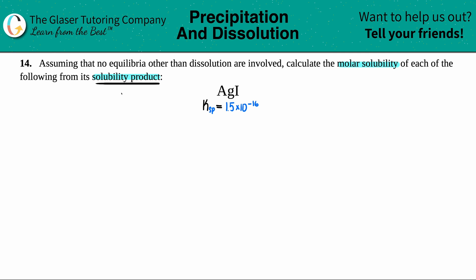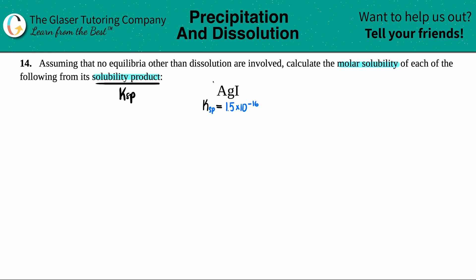Keep in mind that solubility product is just KSP — solubility product. I went to the back of the textbook to find out what the solubility product of AgI is. It's 1.5 times 10 to the negative 16. Now, what is a KSP value without a balanced equation? It's nothing. So I have to write the balanced equation for AgI.